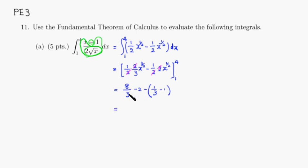So you're gonna get, let's see, 8 thirds minus 1 third is 7 third, minus 2 plus 1, so 7 thirds minus 1 would be 4 thirds. That's the value of this definite integral. All right, that's it, I hope that this was clear.